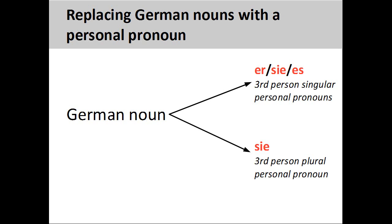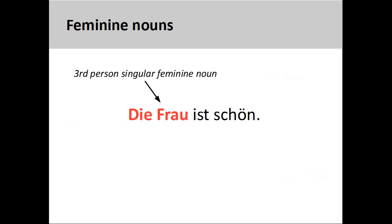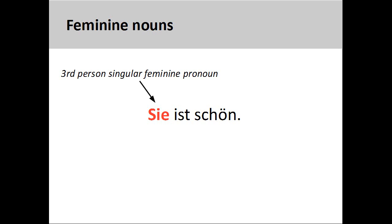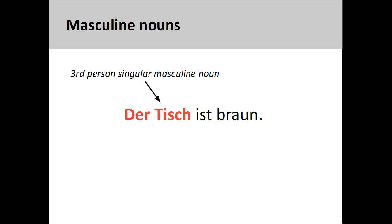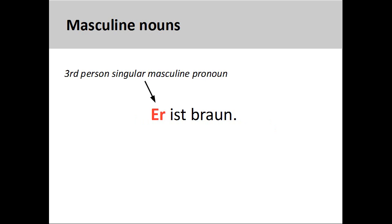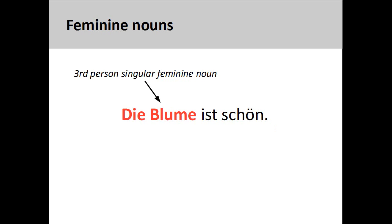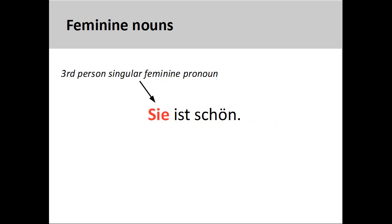In German, we can replace nouns with third person singular and plural personal pronouns. In the case of singular personal pronouns, this substitution can be based on the biological gender of the noun. For instance, in the sentence die Frau ist schön — the woman is beautiful — the feminine noun Frau can be replaced by the third person singular feminine personal pronoun sie, she. This makes sense as the substitution is based on biological gender. German also makes substitutions based on the grammatical gender of the noun. For instance, in der Tisch ist braun — the table is brown — the masculine noun Tisch can be replaced by the third person singular masculine personal pronoun er, he. Or the feminine noun Blume in die Blume ist schön — the flower is beautiful — can be replaced by the third person singular feminine personal pronoun sie, she.